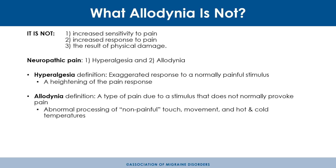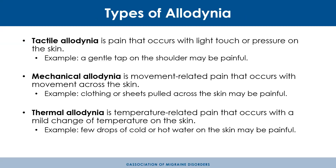Allodynia is pain due to a stimulus that does not normally cause pain — an abnormal processing disorder of that non-painful stimulus. There are three types: tactile allodynia, where a tap on the shoulder or laying hands on the neck causes pain; mechanical allodynia, often movement-related such as brushing hair or pulling up sheets; and thermal allodynia, where even mild temperature changes cause pain.